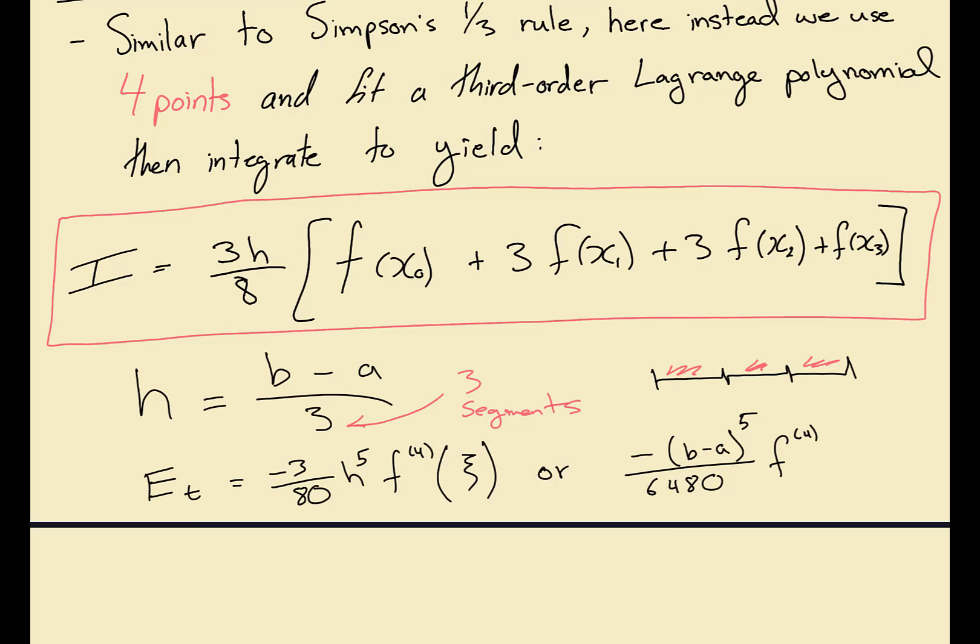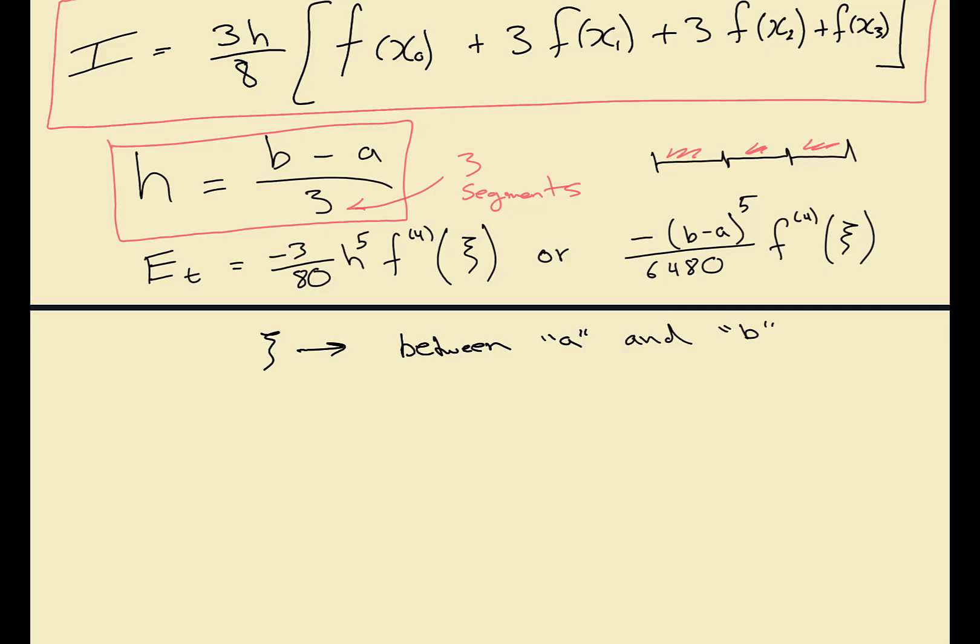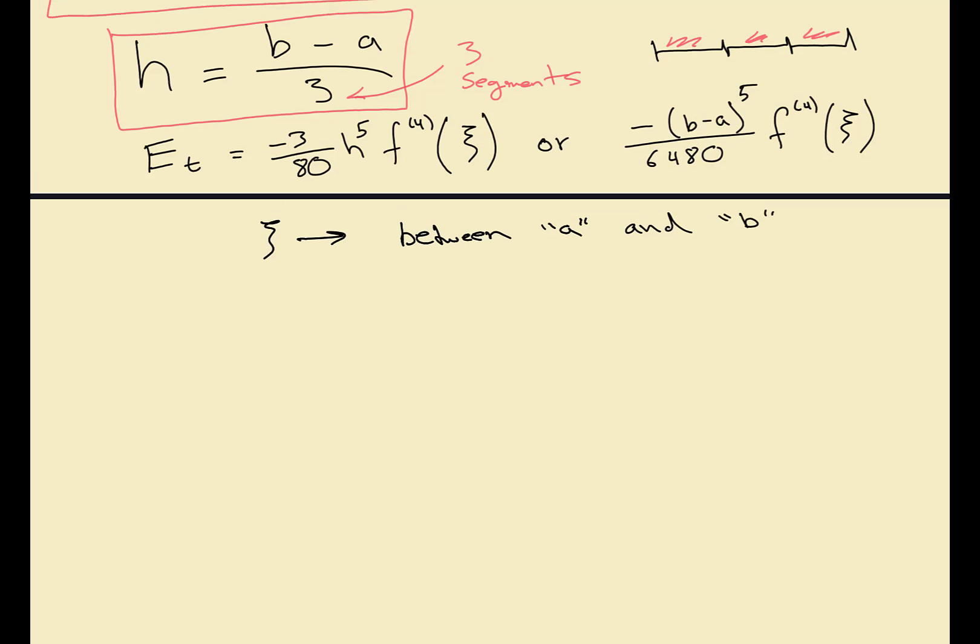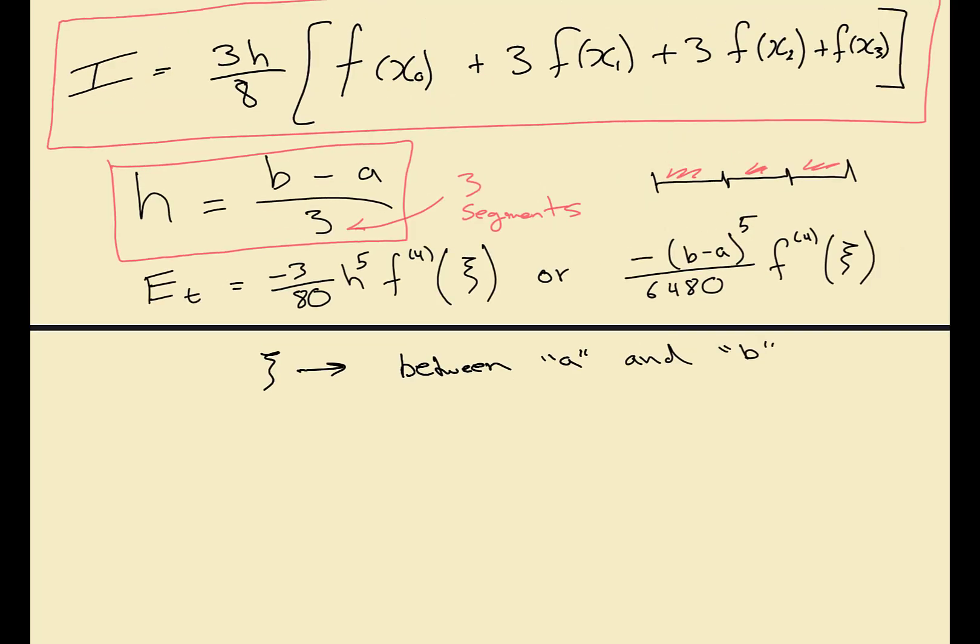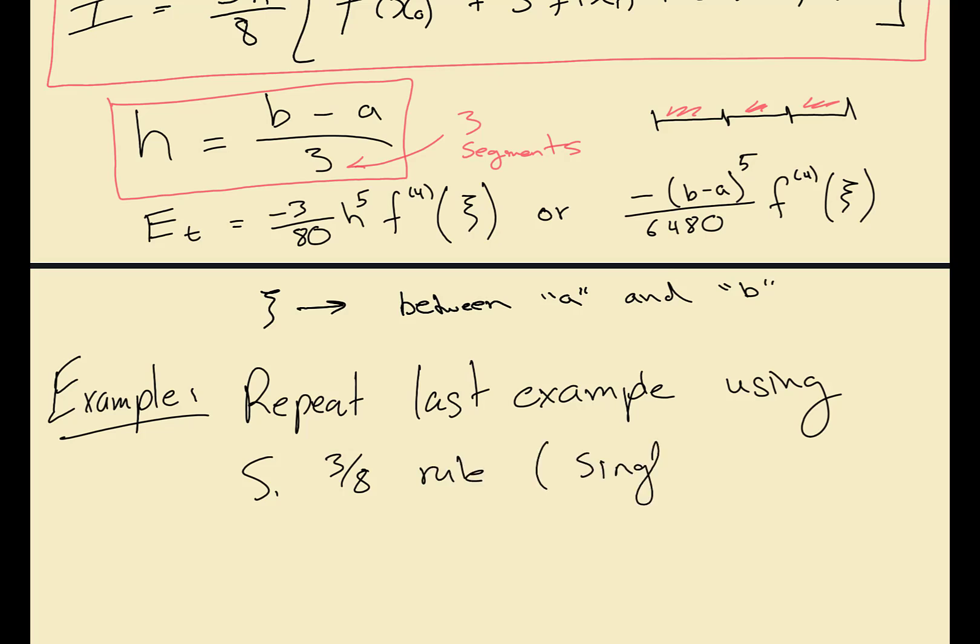Psi here is between a and b, so these two equations go hand in hand. We'll do an example now using the three-eighths rule just like we did for the other ones, and we're going to be repeating the same example just to kind of look at the difference between them. So we have an example and it's basically repeating last example using Simpson's three-eighths rule and we're only doing a single application in this case.